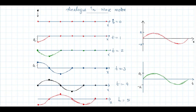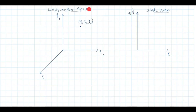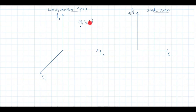Now we concentrate on ensemble theory. For classical systems, the most appropriate method is to deal with phase space. Phase space is a space spanned by generalized coordinates and generalized momentum for a dynamical system. Configuration space is spanned only by generalized coordinates — any point gives the configuration at a particular instant, but gives no clue about the dynamics.